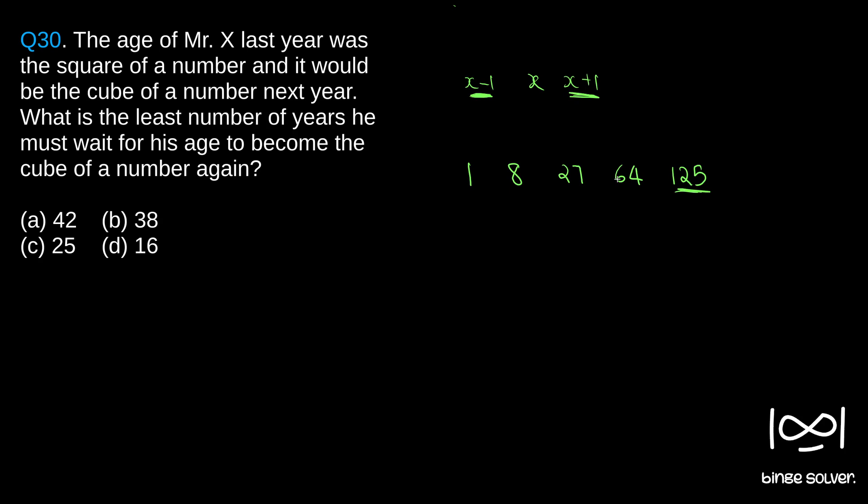So, if you see, if you take 64, 64 minus 2, which is 62, is not a perfect square. So, that is not our number.